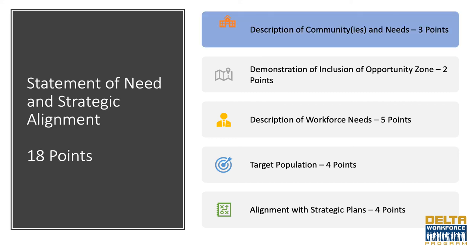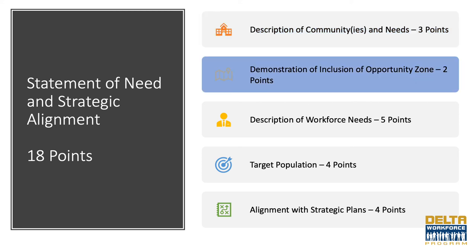Element one, description of community or communities and needs, is worth three points. The applicant must describe the region to be served by the project, including the required supporting documentation used to identify the region, the region's economic and workforce challenges, the consequences of not addressing those challenges, and the required documentation identifying named challenges including the region's unemployment rate. Element two, demonstration of inclusion within an Opportunity Zone (OZ), is worth two points. The applicant must identify at least one census track within the service area classified as an OZ as designated under the Tax Cuts and Jobs Act. While not a requirement, applicants proposing to provide services to an OZ will receive the two points.